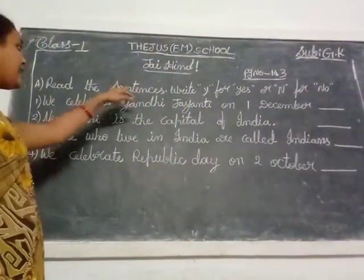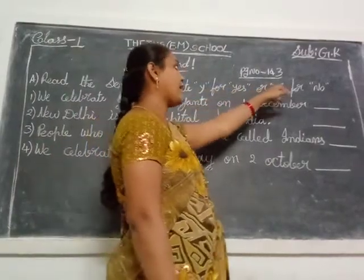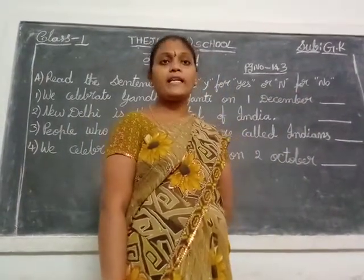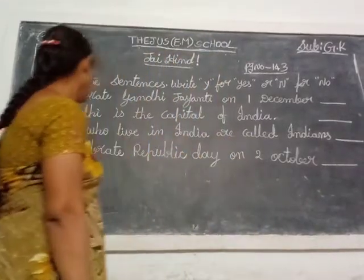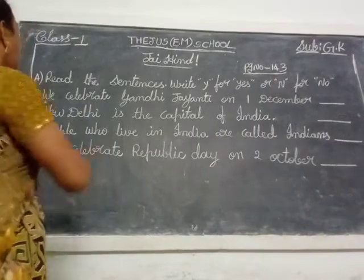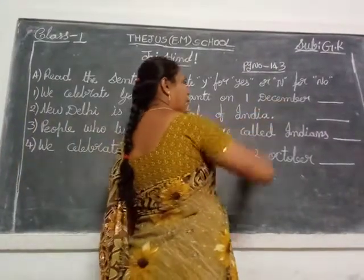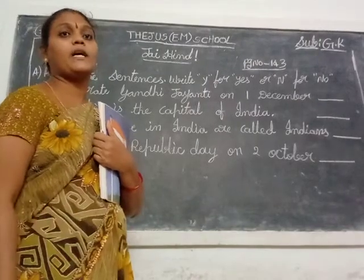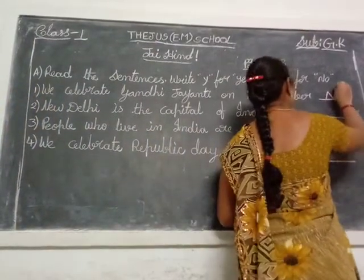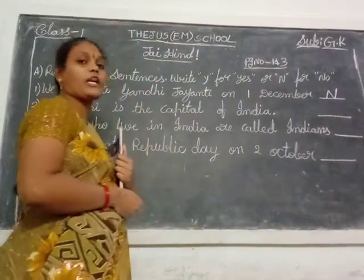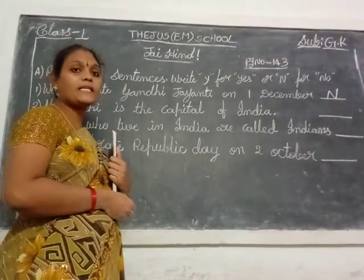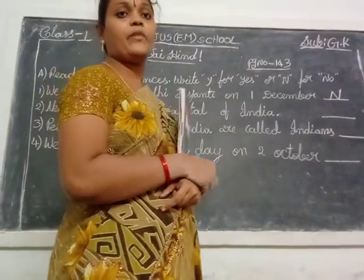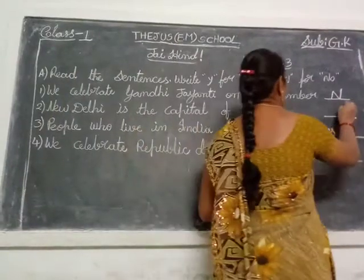Now here — read the sentences and write Y for Yes or N for No. First sentence: We celebrate Gandhi Day on 1st December. Which day is Gandhi Day? 2nd October. So this is the wrong statement — you put the letter N. Next: New Delhi is the capital of India. What is our Indian capital? New Delhi — correct. So you put the letter Y.